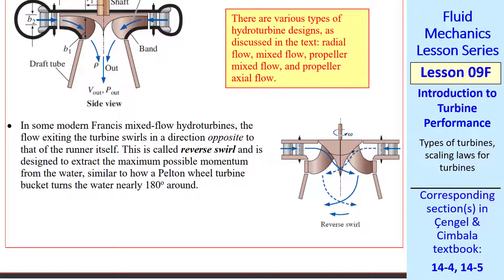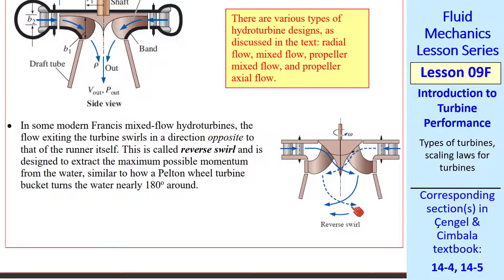In some modern Francis mixed flow hydroturbines, the flow actually exits with swirl opposite to the direction of the turbine itself. Why would they do that? It's similar to the Pelton wheel, where we try to turn the water 180 degrees — we can extract more momentum from the water by having some reverse swirl.